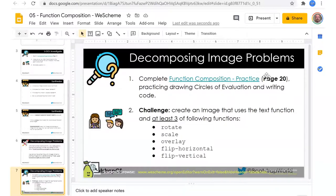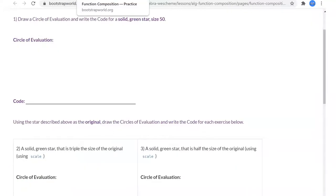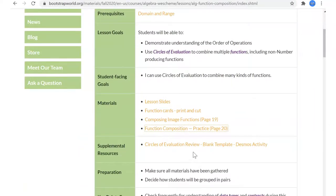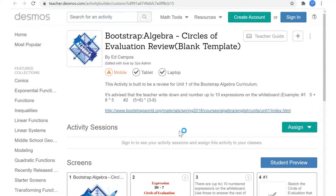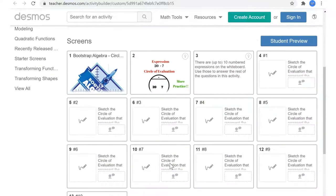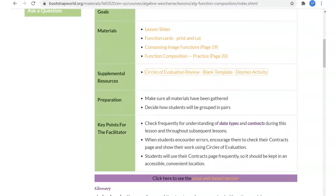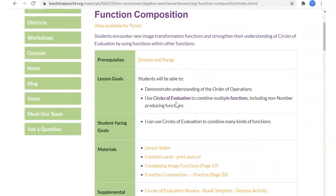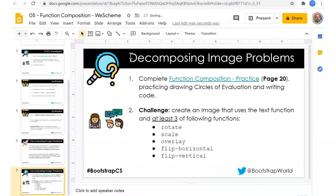Page 20, so do page 20 to create an image that uses the text function and at least three. I'm saying we don't have to, if you're not doing the Desmos thing you don't have to do that. So that's going to be the only to do, it's going to be this one.